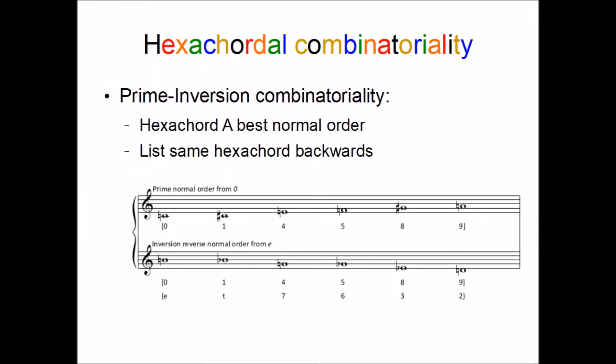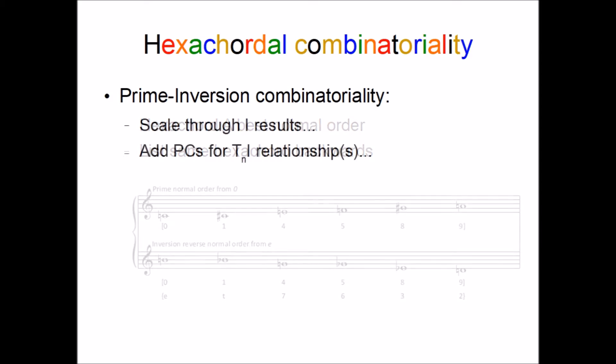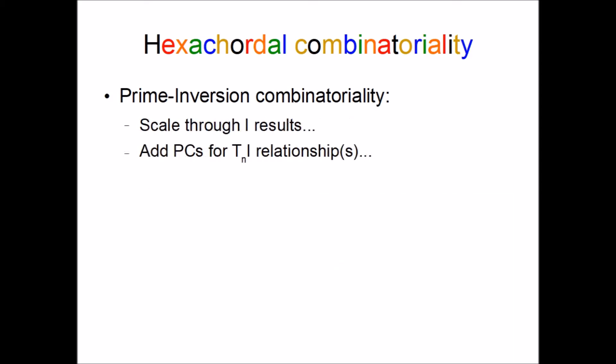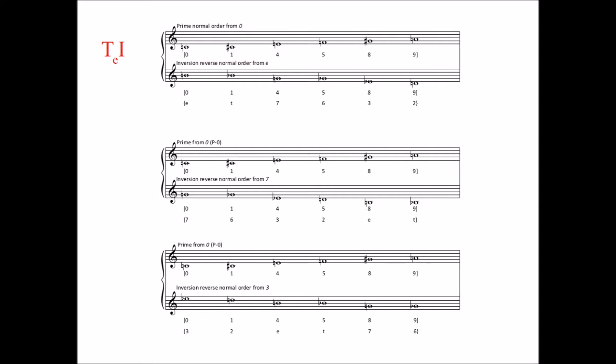Now, to find the prime inversion combinatoriality, first list hexachord A in best normal order. Second, list the same hexachord in normal order backwards, moving counterclockwise instead of clockwise from zero. Third, scale down through the unordered I results. If the particular I set duplicates no pitch classes with P, then they will form an aggregate. And fourth, add the pitch classes, which should all have a uniform sum. This uniform sum is the T and I relationship, meaning the two hexachords are I related. You should arrive at TEI, T7I, and T3I.